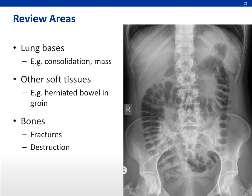Moving on to review areas — always look at the lung bases for consolidation and masses. Look at the other soft tissue outside of the abdomen, as pathologies can also hide there, like herniated bowel in the groin. And do not forget the bones — always look at the bones for pathologies like fractures or destruction.